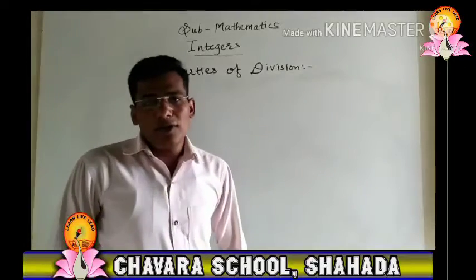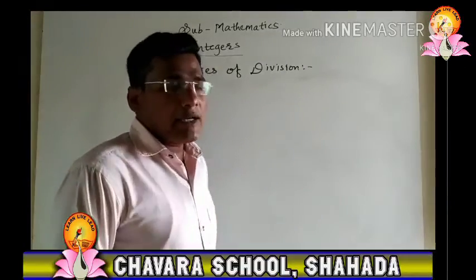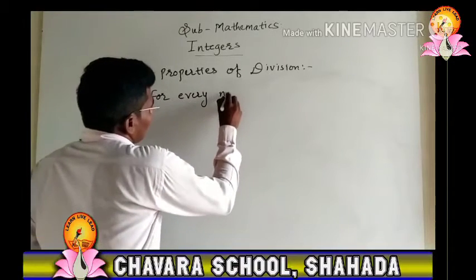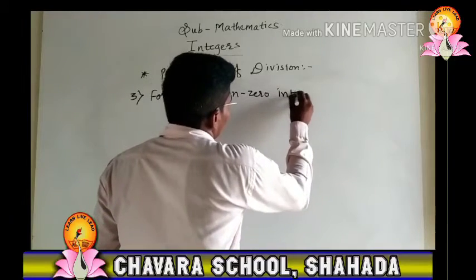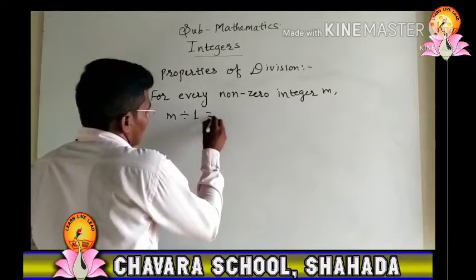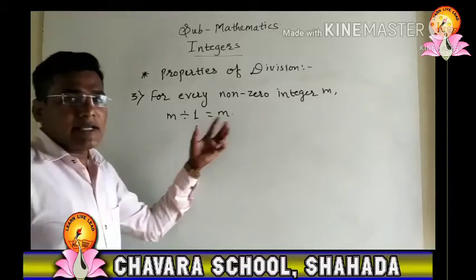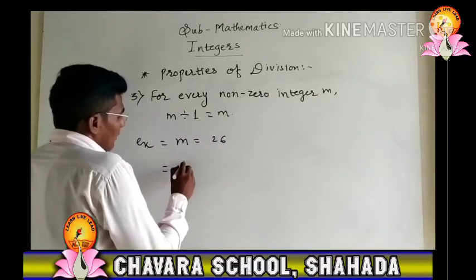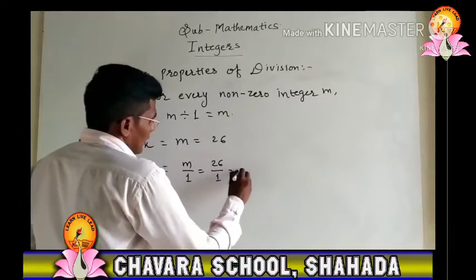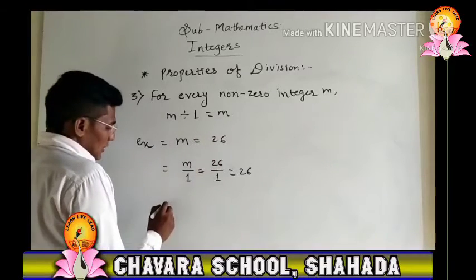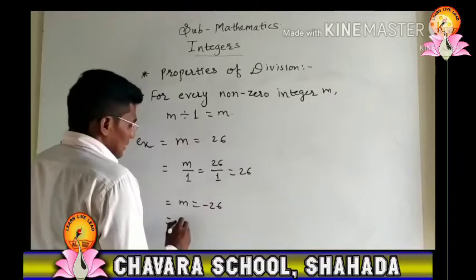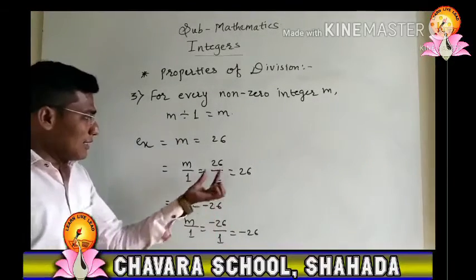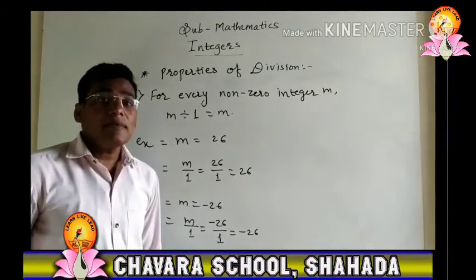The next property is: for every non-zero integer m, m divided by 1 equals m. Any integer divided by 1 is always that same integer. For example, if m equals 26, then 26 divided by 1 equals 26. If m equals negative 26, then negative 26 divided by 1 equals negative 26. Whether the integer is positive or negative, the answer will always be that same integer.